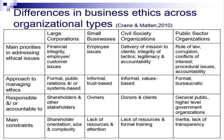Let us look at the various ways in which different sized companies view business ethics — this table is very interesting. The organizations are divided based on their size by Crane and Matten: large corporations, small businesses, civil society organizations, and public sector organizations.